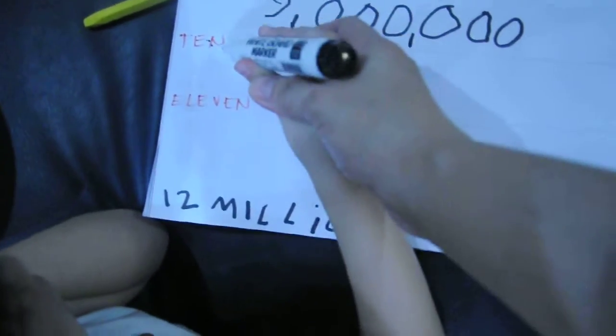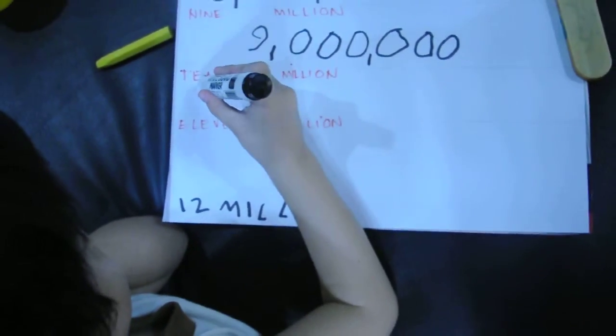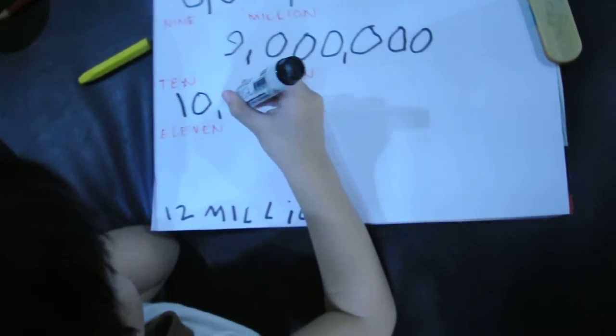The 8 million, 9 million. No, 10. 10. Very good. Comma. Okay.